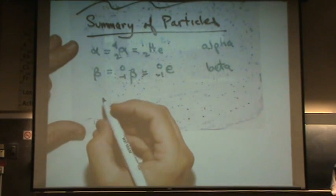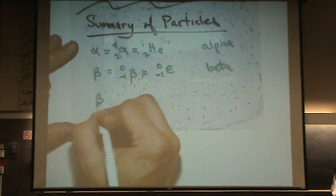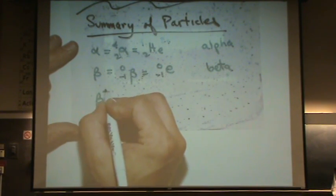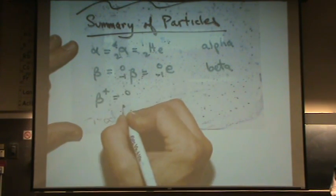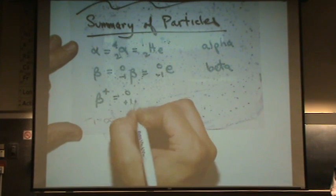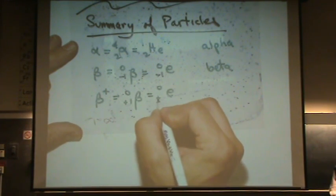Similar to the beta is what's called a positron. So sometimes you'll see a plus up there. It's a 0 plus 1, or an electron plus 1.